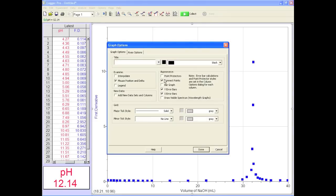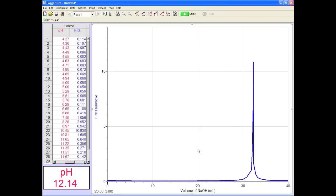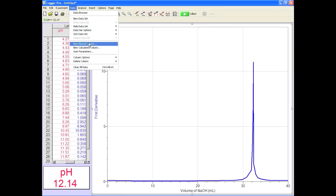If you did a killer job and got several points in the steep region, the top of the curve will be close to the equivalence point. For an even better indication of the equivalence point, a second derivative is better.